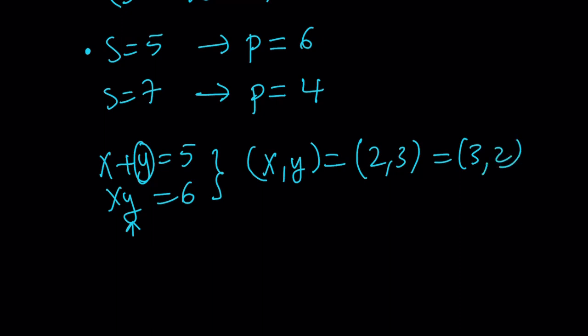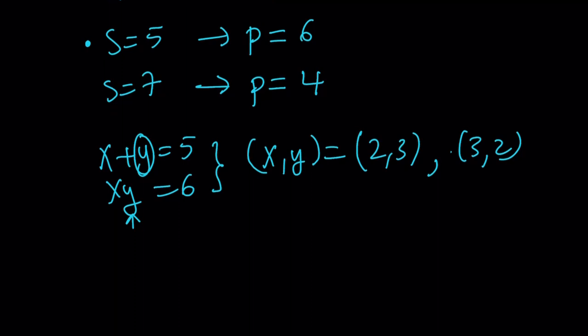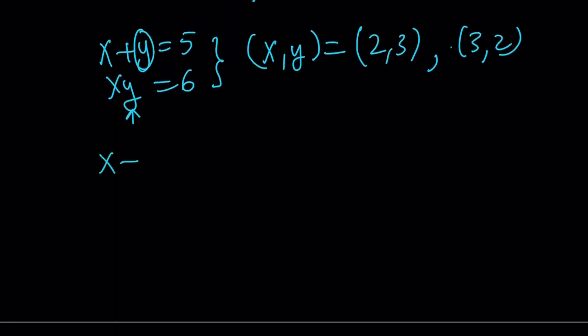But of course they could switch around, which means I can write my ordered pairs as 2 comma 3 or 3 comma 2. That shouldn't be an equal sign. That should just be a comma. Alright, so we got two solutions from here.